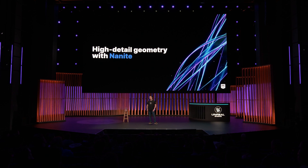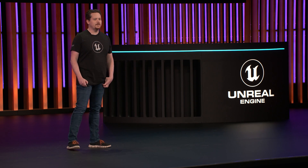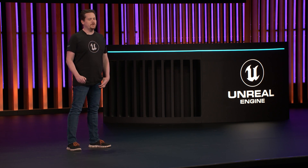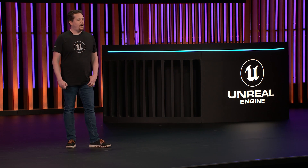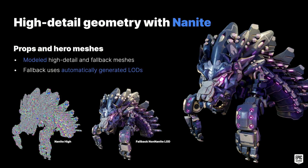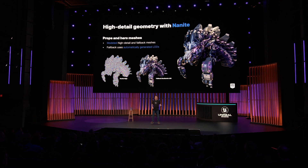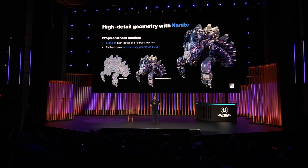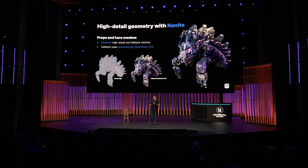Nanite is one of our biggest new features. It lets us create highly detailed geometry, so of course we wanted to use it. Our props and hero meshes are modeled directly in a digital content creation tool, and our artists are allowed to use whatever techniques and tools they prefer. It is then exported into the editor, where we rely heavily on automatically generated LODs for our fallback meshes. It's a very common workflow that most artists are familiar with.